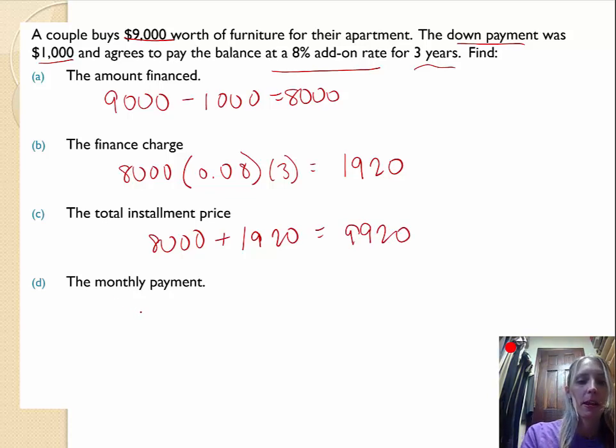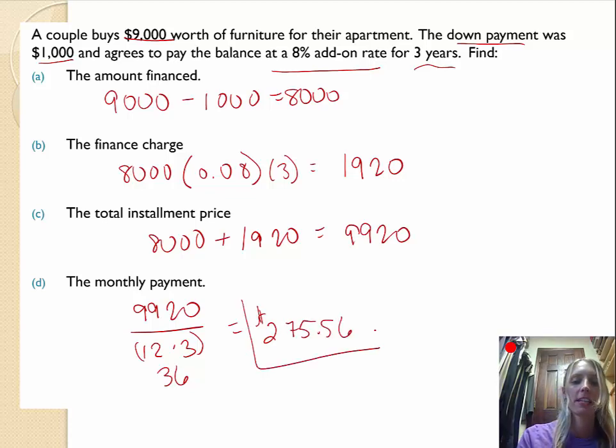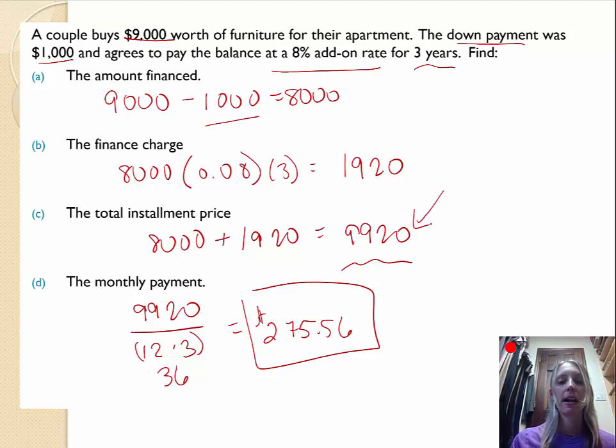And last but not least, the monthly payment. So the monthly payment is the total installment price divided by 12 times the number of years. And again, you want to make sure you're doing this first. That's 36. $9,920 divided by 36 is approximately $275.56. So every month, that's what this couple will have to pay. And just because I like seeing this, let's see how much more they're paying. You can even see here, they put some money down and they're already paying more back than what it originally cost. And to figure out the total they're going to pay for this furniture, we would add the down payment to the installment price. That would give us $10,920. They're going to pay almost $2,000 more because they're paying for it monthly instead of just all upfront. These have been examples of installment loans. Thank you for stopping by.